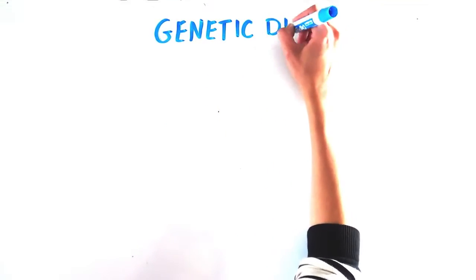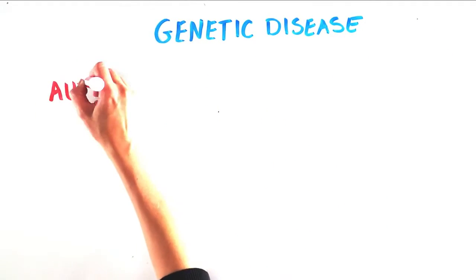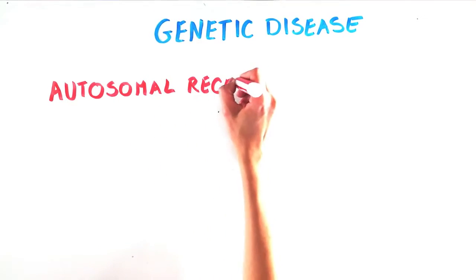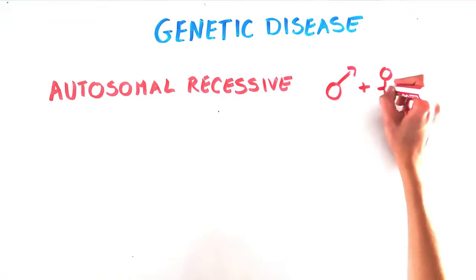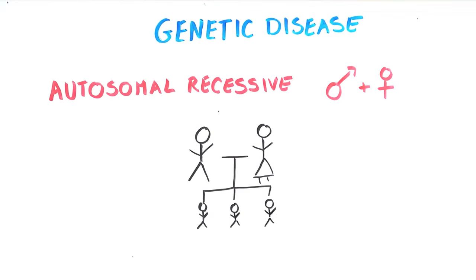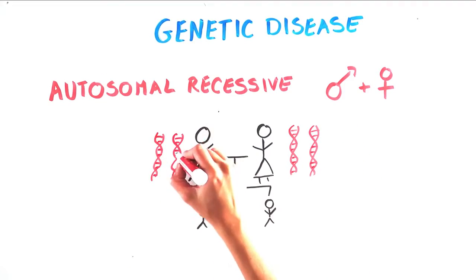Genetic diseases can be passed on in many ways. One common type of genetic inheritance is autosomal recessive, which means both men and women can get the disease, and both parents have to be carriers of the defective gene in order to pass it on to their child.